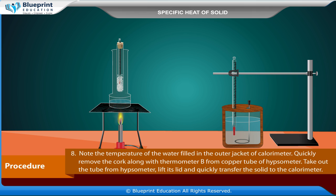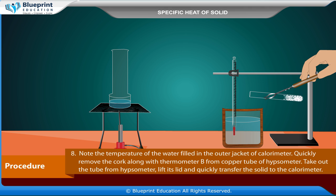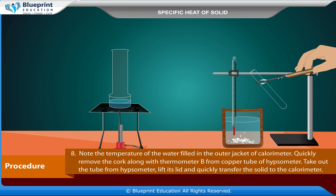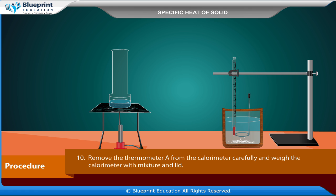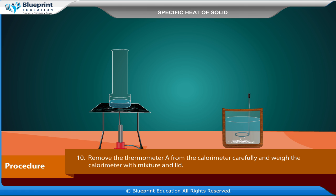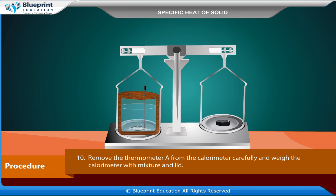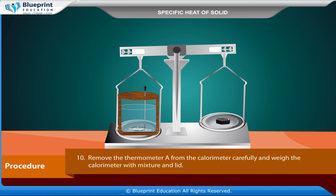Note the temperature of the water filled in the outer jacket of the calorimeter. Quickly remove the cork along with thermometer B from the copper tube of the hypsometer, take out the tube, lift its lid, and quickly transfer the solid to the calorimeter. Stir the mixture until the temperature becomes steady. Note down the final temperature of the mixture, remove thermometer A from the calorimeter carefully, and weigh the calorimeter with mixture and lid.